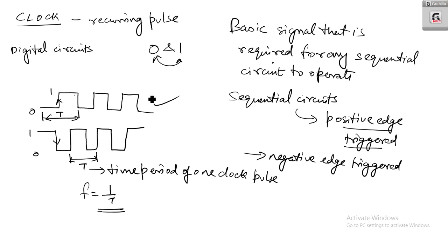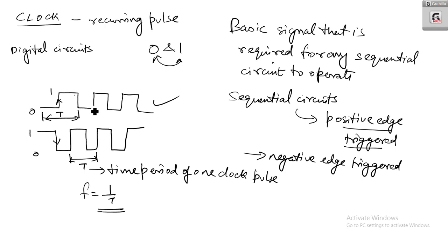I think you have got an introduction to clock. Clock means it is basically a continuously occurring pulse varying between 0 and 1. The time period for one clock is T and the frequency of the clock is given by 1 by T. Clock varies between 0 and 1 in particular time intervals. In the next lecture we will be dealing with two types of sequential circuits.